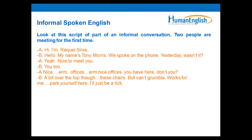If you look at this conversation, it's quite different from formal language. You can see two people speaking — Raquel and Tony — and it's very informal. It's quite different from written language. There are some expressions and maybe some new words. We have the word 'grumble' — 'but can't grumble.' Grumble is another way to say complain: 'I can't grumble' or 'I can't complain.' We also have the expression 'I'll just be a tick.'